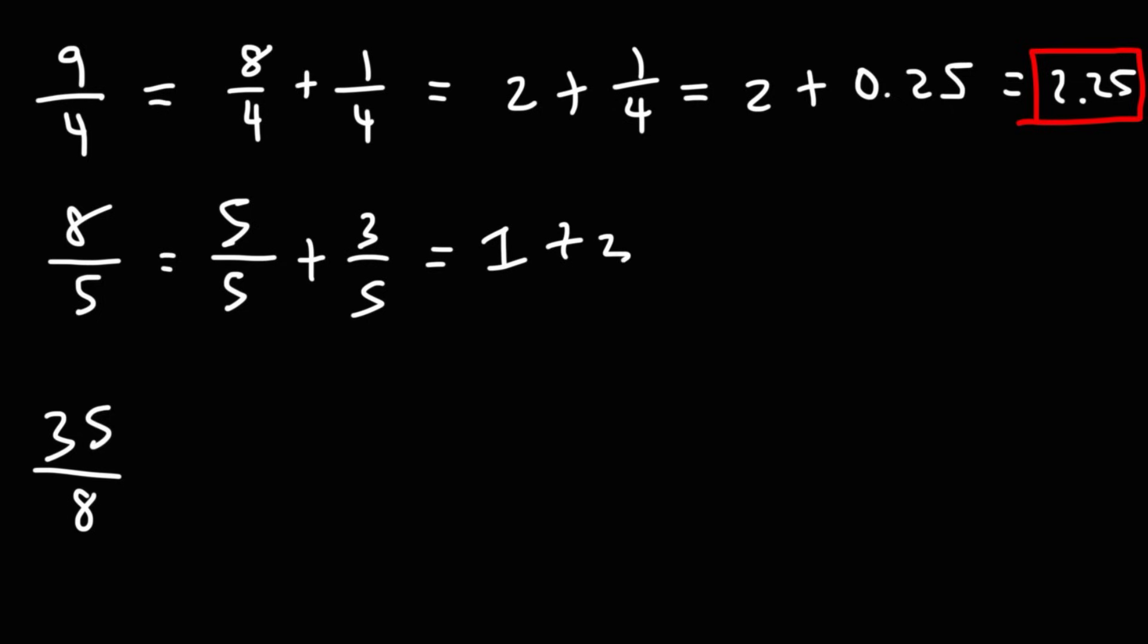But 3 over 5 we can write that as 3 times 1 over 5. Now 1 over 5 is in our list. 1 over 5 is 0.2, and 3 times 0.2, 3 times 2 is 6, so 3 times 0.2 is 0.6. So this is going to add up to 1.6. So 8 over 5 as a decimal is 1.6.